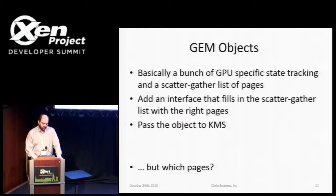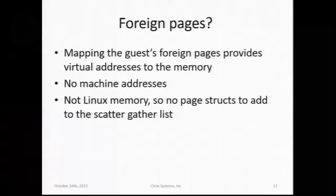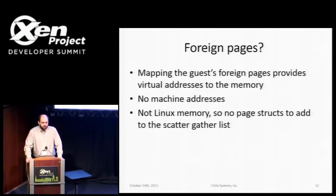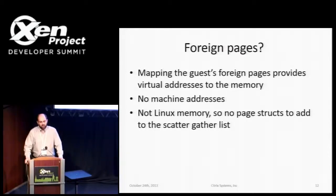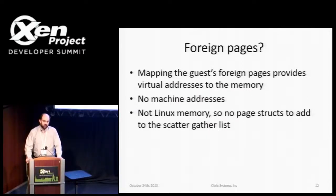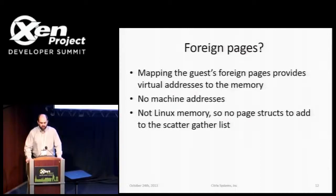But you need to know which pages, and GEM needs to know which pages. The existing QEMU optimization does a foreign page mapping, which gets a local virtual address to the frame buffer. Unfortunately it doesn't get us the machine addresses, and the GPU needs machine addresses. Also, a Linux scatter-gather list is filled in with page structs, so the memory needs to be known to the kernel's VM. Foreign pages are kind of magic — the hypervisor fills in the right entries in your page table so you can resolve a virtual address, but when you ask Linux what the physical address is for that virtual address, it has no idea and you get all sorts of crashing.